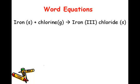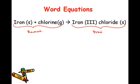So, take a second to identify the reactants in this equation. Iron and chlorine are the reactants, and iron 3 chloride is what's made. It's the product.